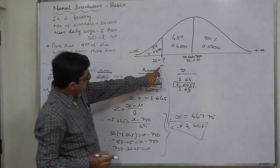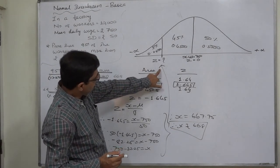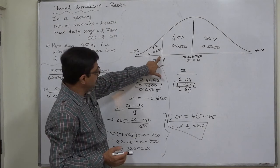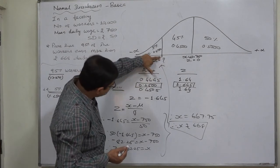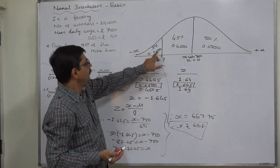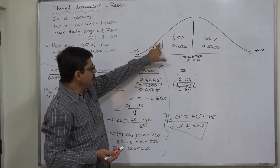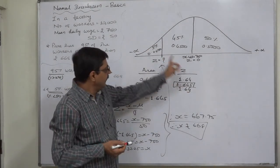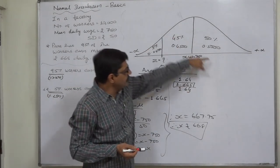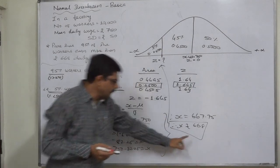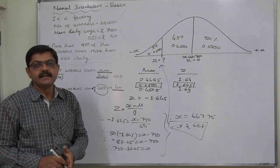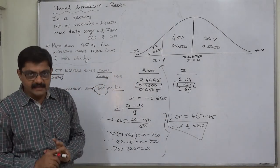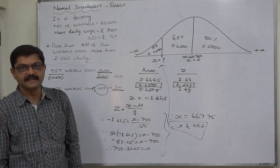That means the value of X here comes to 668. So it is proved that if X is 668 at this particular point, 5% of workers have income less than 668 and the remaining 95% have income greater than or more than 668. Hence, it is proved.